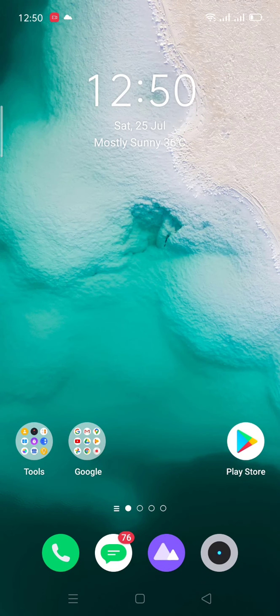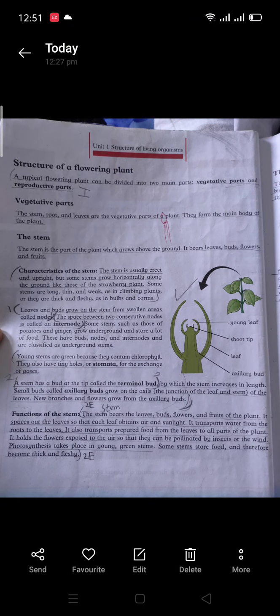Assalamu alaikum students, welcome to my channel. Today we are going to start Amazing Science Book number seven. So let's open page number two. Our first topic is structure of a flowering plant. A typical flowering plant can be divided into two main parts: vegetative and reproductive. Reproductive means the flower.